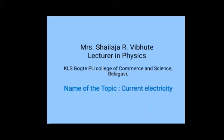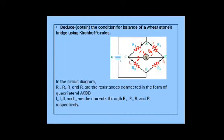As we know, in the first law, that is Kirchhoff's current law, it is applied at a node in an electrical network. The sign convention is: current entering the node is positive, current leaving the node is considered as negative. In Kirchhoff's second law, the algebraic sum of the product of current and resistance is equal to the algebraic sum of EMFs in a loop. Now let us learn how to obtain the balancing condition of Wheatstone's network. This is a very important question — it carries 5 marks. So let us understand how to obtain the balancing condition of Wheatstone's bridge using Kirchhoff's rules.